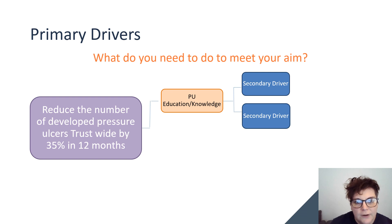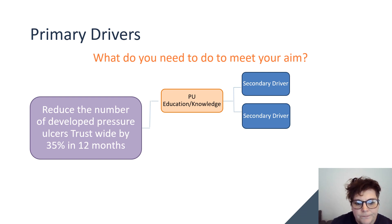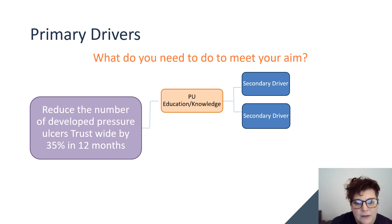The next part of your driver diagram is the primary drivers — what you need to do to meet your aim. If we're trying to reduce the number of developed pressure ulcers, we know that knowledge and education around pressure ulcers is key to reducing them. That is our high-level next step, which we can then break down into secondary drivers. Pause here and have a think about a couple of primary drivers relevant to your project and fill them in.